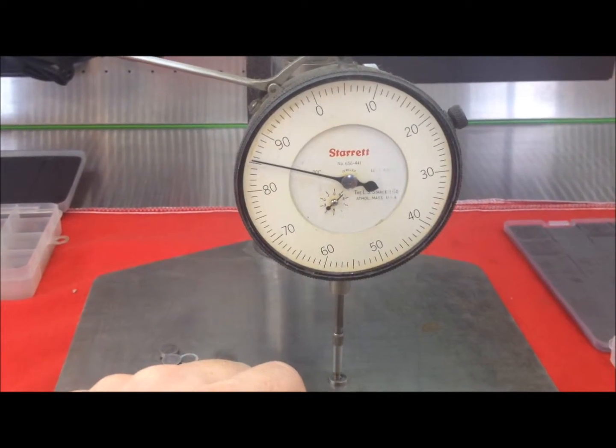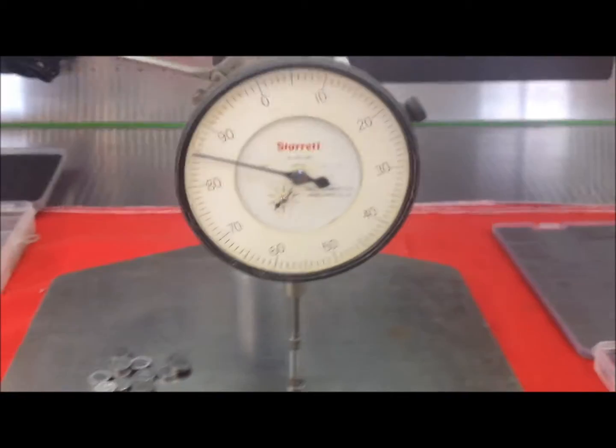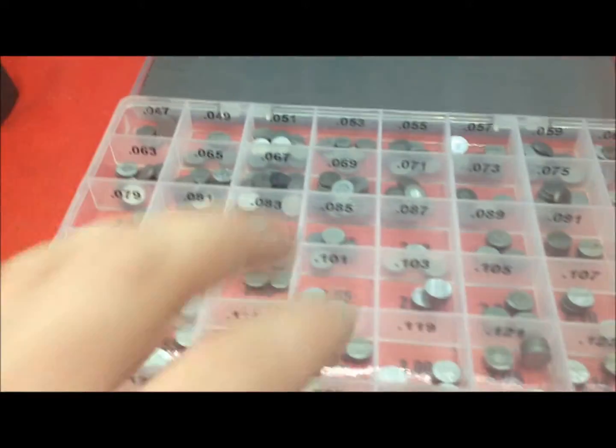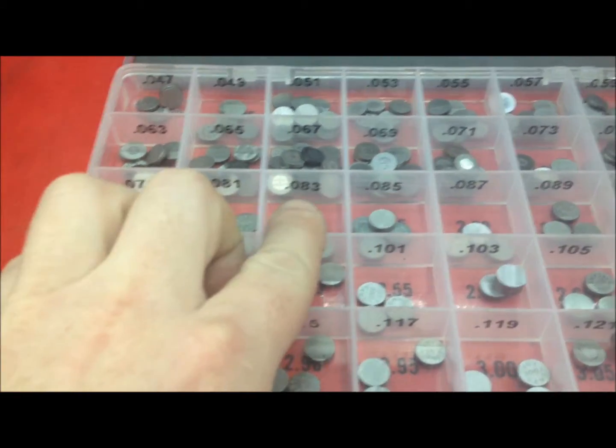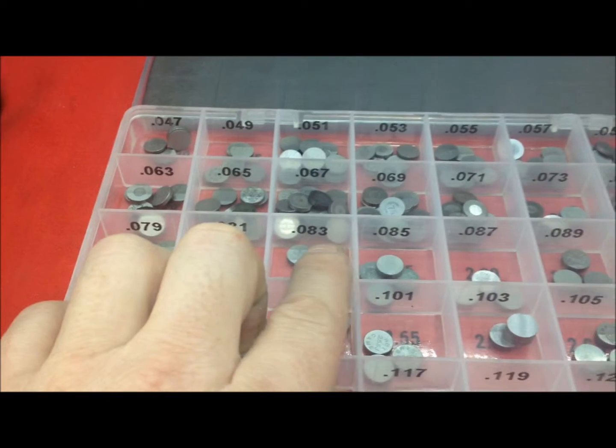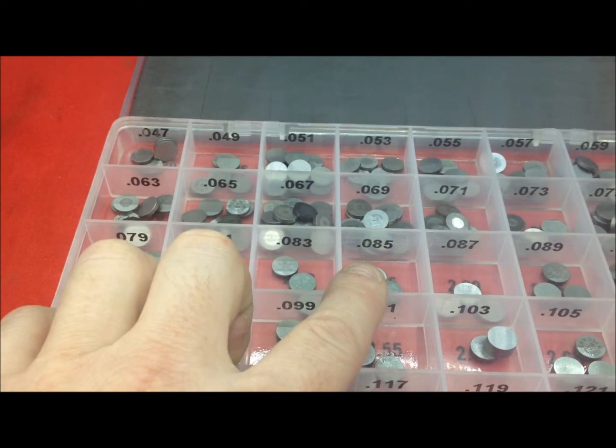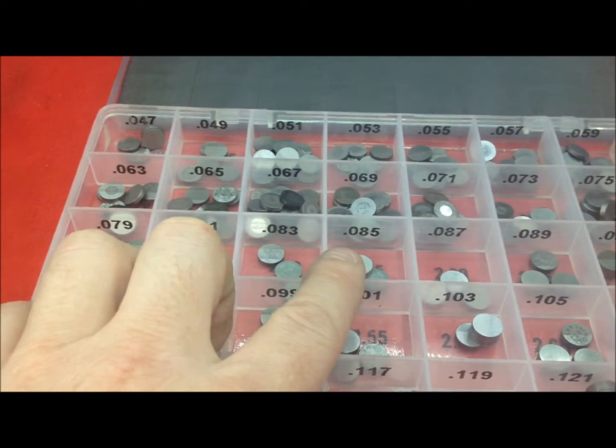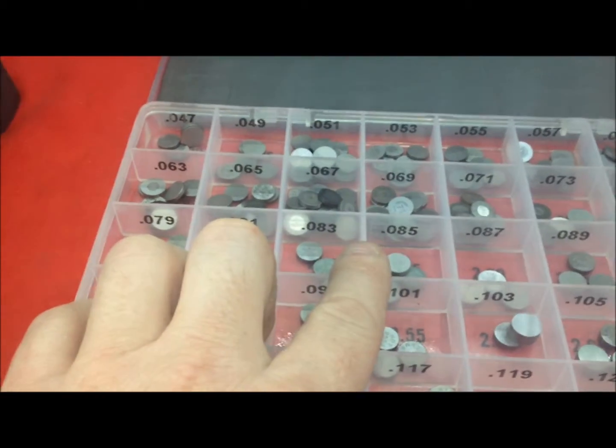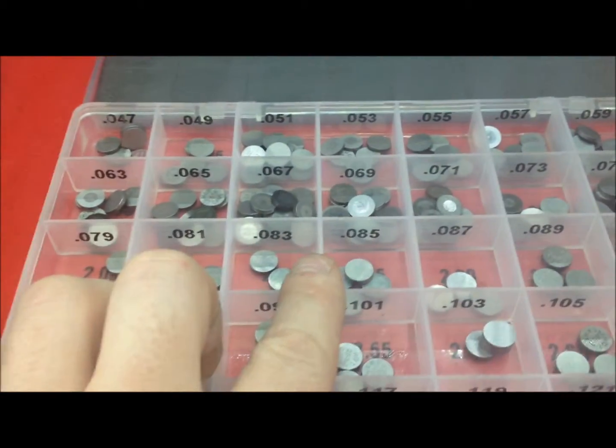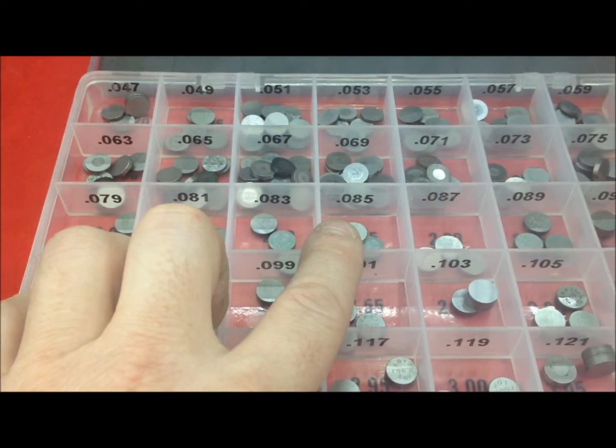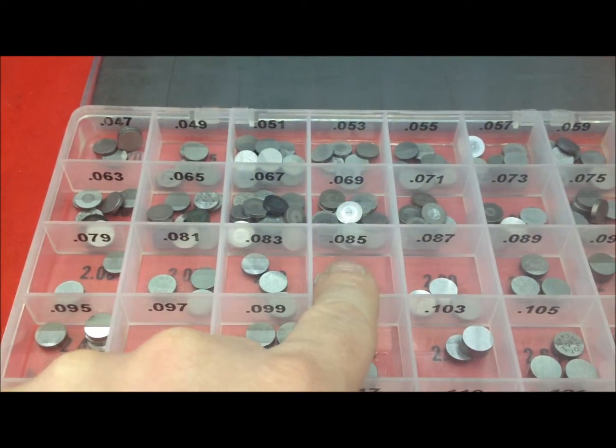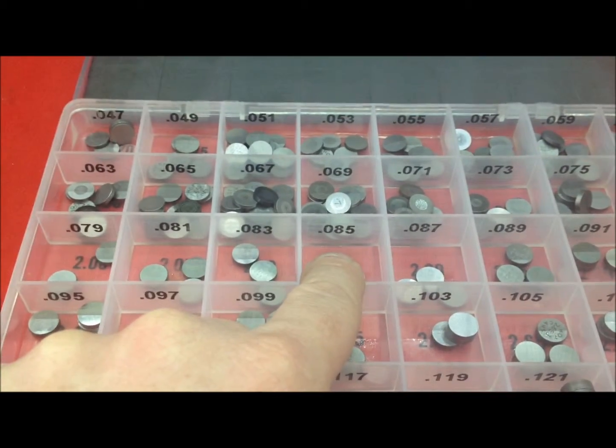So this one is reading 85. Now before I start, let's say I have an 84,000 shim. Notice it's going to jump 2,000 per shim separation here. So from one shim there is no 84,000, we're going to jump 2,000 per each one. So let's say if I have an 84,000, it's going to go in the 85, I'm going to stick it in the 85.